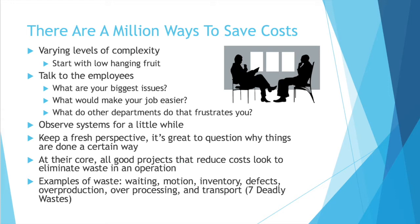Waste can be waiting on something to happen, motion that's not needed, inventory where you have too many things, defects that prevent a product from getting to the end user, overproduction where you're making things you don't even need at that time or may never use, overprocessing where you're doing too much and not adding value, and transport where you're sending things all over the place with a sloppy supply chain. These are typically known as the seven deadly wastes — I have a separate video on this. They're very fascinating, and if you really focus on them, you can begin to see them everywhere.